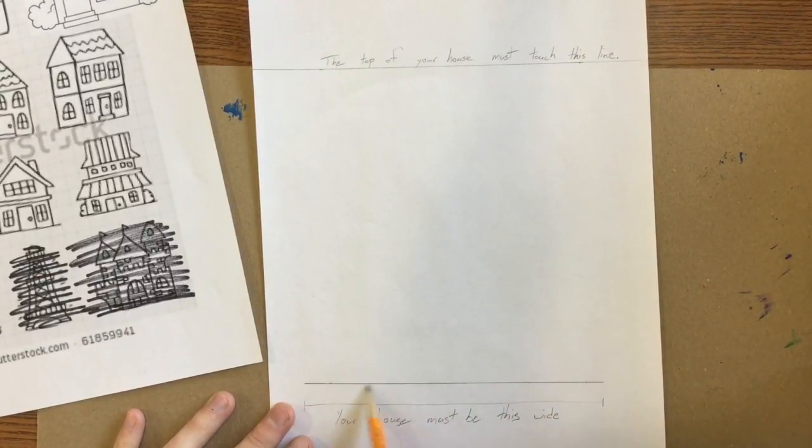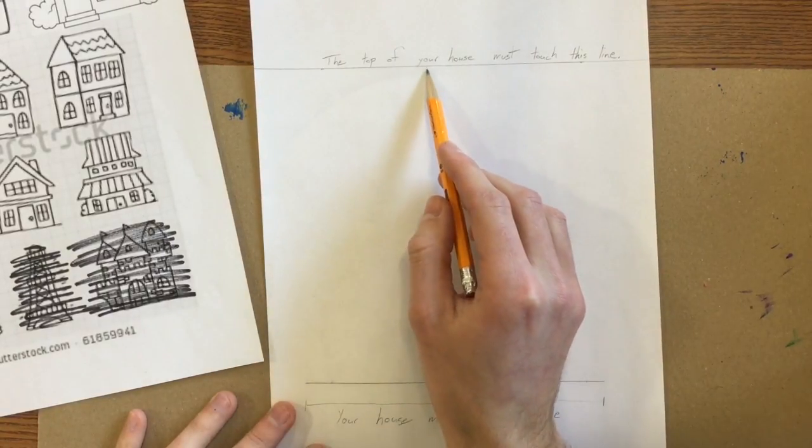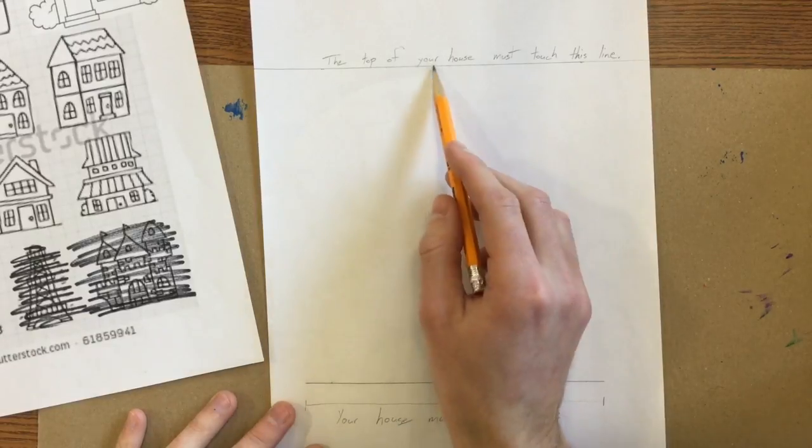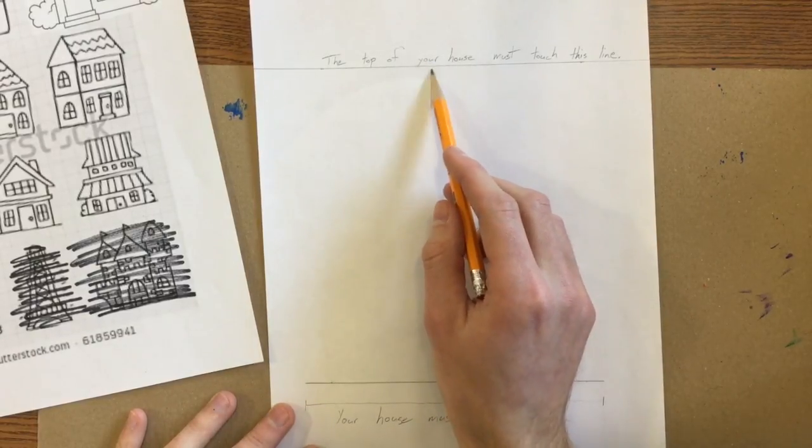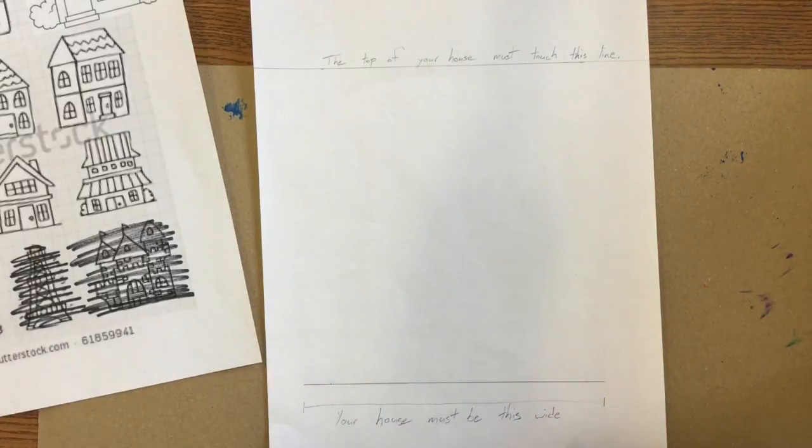Your house has to be this long. So this is going to be the bottom of my house. It also cannot go any higher than this line. So the highest point of your house needs to touch this line. That just makes sure that it's going to fit on our piece of canvas or burlap later on.